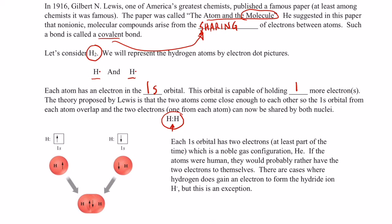Each 1s orbital has two electrons in it, at least part of the time, which is a noble gas configuration for the element helium. If the atoms were human, they'd probably rather have the two electrons to themselves, and there are cases where hydrogen does gain an electron to form an ion, but that is an exception to the rule.